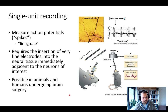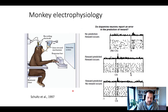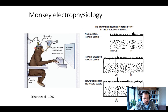It's highly intrusive, requiring insertion of fine electrodes into neural tissue, and is only possible in animals or humans undergoing brain surgery with their consent. It has led to important discoveries in neuroeconomics, such as the observation of the reward prediction error. Monkey electrophysiology is commonly done — the monkey sits in a chair, receives a reward, and performs complex tasks while recordings are taken from interesting neurons within the brain.